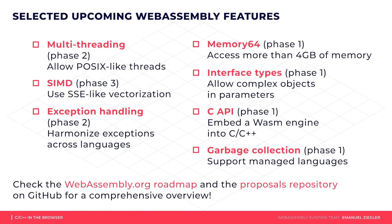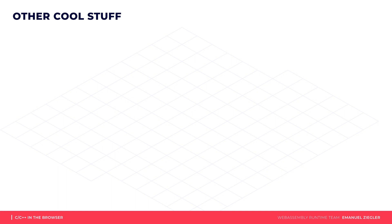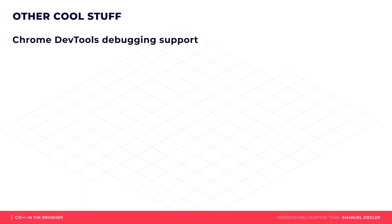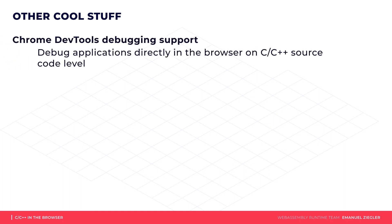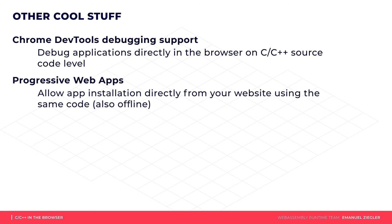If you are interested in these or other upcoming features, you can go to WebAssembly.org or the WebAssembly GitHub page for more information. We will also have WebAssembly debugging support for C++ applications, which is already available for testing. You might also want to check out progressive web apps, which allow your applications to run offline just like a native application and be installed right from your website.